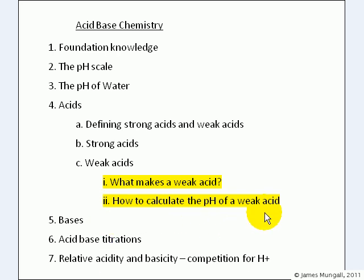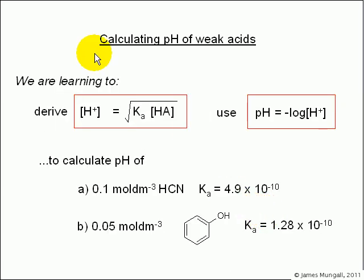Let's calculate the pH of weak acids. We're learning to derive this formula: H+ concentration equals the square root of Ka times the weak acid concentration HA, and then use pH equals minus log of the H+ concentration to work out the pH. We'll use those to calculate the pH of 0.1 mol per decimeter cubed HCN, a weak acid with Ka of 4.9 times 10 to the minus 10, and then a similar exercise, 0.05 mol per decimeter cubed of phenol, another weak acid with Ka of 1.28 times 10 to the minus 10.